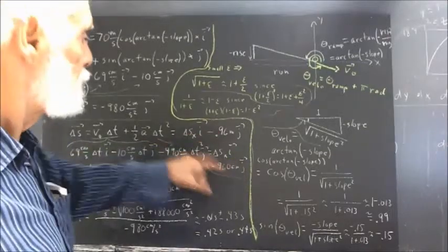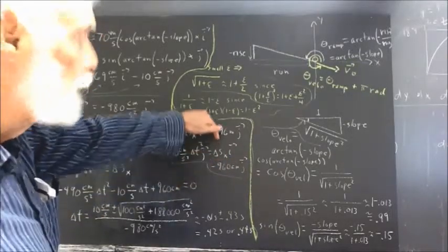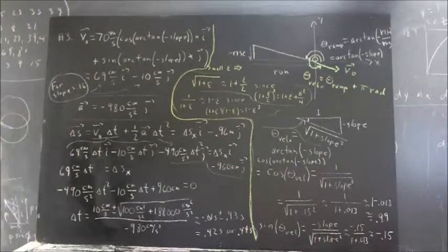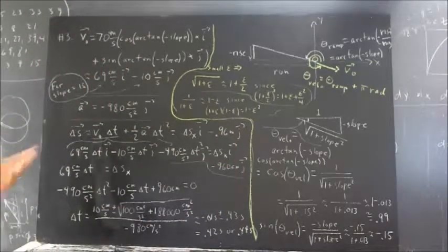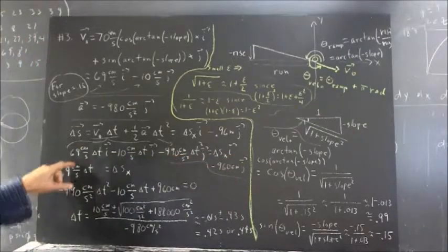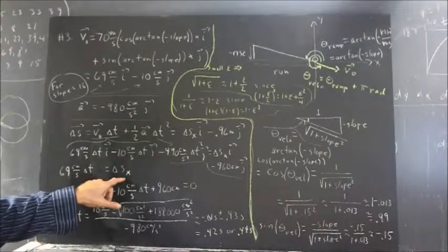Well, this right-hand side hasn't changed. Whatever our X displacement is times I minus 960 centimeters times J. Well, now, I component equal to I component means 69 centimeters per second delta T equals delta SX.